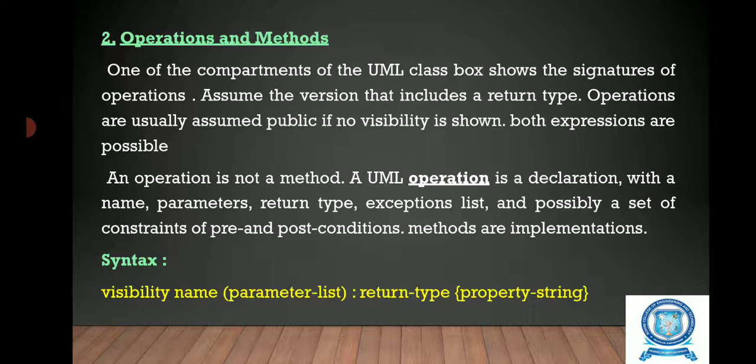Operations and methods. One of the compartments of the UML class box shows the signatures of operations. Assume the version that includes a return type. Operations are usually assumed public if no visibility is shown. Both expressions are possible, both public and private. An operation is not a method. A UML operation is a declaration with a name, parameters, return type, exceptions list, and possibly a set of constraints of pre and post conditions. Methods are implementations. The syntax is shown like this: visibility name, parameter list, return type, property string.